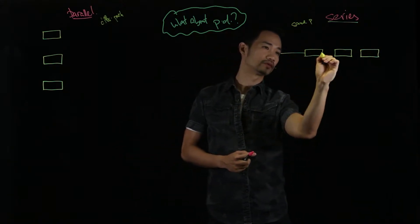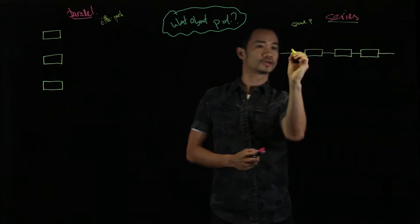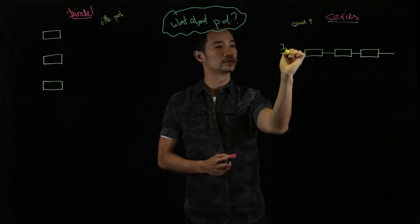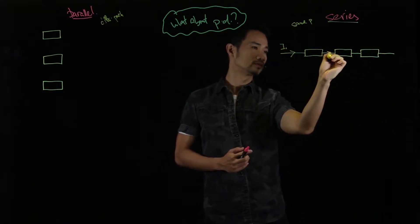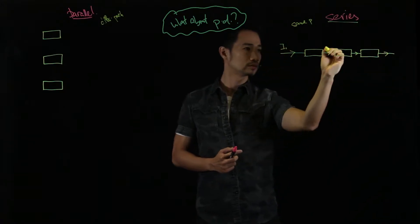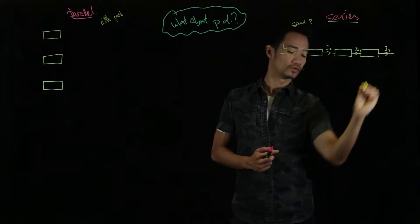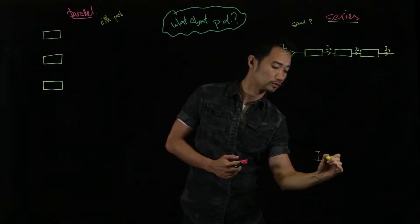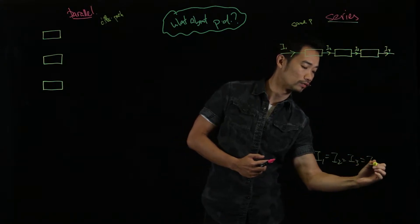So we know that, if they're on the same path, and we have one current that is going through, the current will be the same throughout. So let me just write this down here. I2, I3 and I4. So we learn that I1 equals to I2 equals to I3 equals to I4.